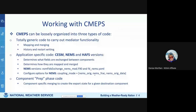When you check out the CMEPs mediator, you'll be getting code that can be organized into three types. There's a generic code base for carrying out the mediator functionality — mapping, merging, history and restart writing. Then there is application-specific code for the three applications currently using CMEPs: CESM, NEMS, and HAFS. This is where the specific fields to be exchanged are defined. Finally, there is prep phase code, which is component-specific merging where the actual export state for a given destination component is created.